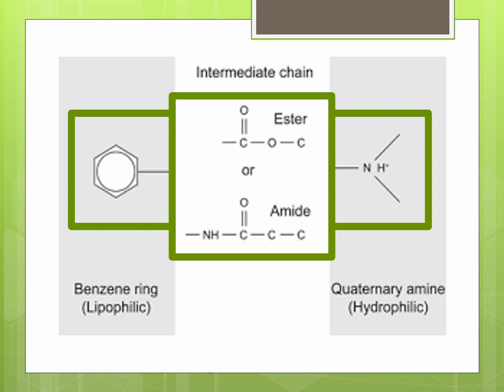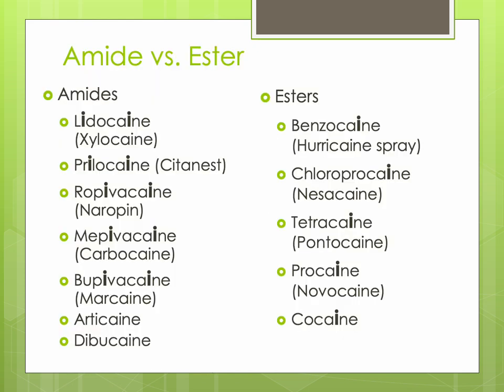The chemical link between the moieties is either an amide bond (NHC) or an ester bond (CO), linking the hydrocarbon chain with the lipophilic aromatic ring. These compounds are therefore designed as either aminoamides or amino esters. The generic name is listed followed by the brand name in parentheses. To memorize which is which: if the generic name has two i's in the name, it is an amide. Ester does not contain an i.